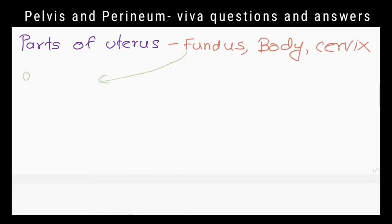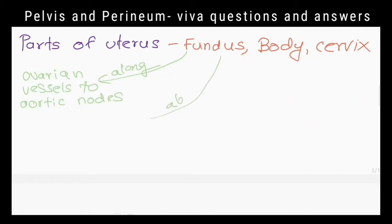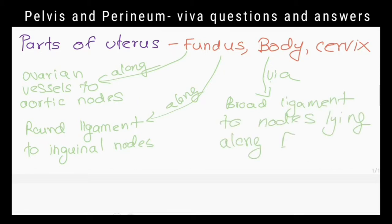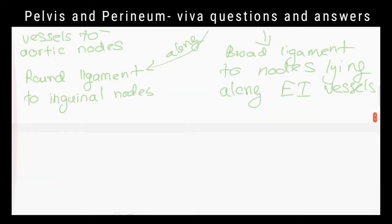Tell me about the lymph drainage of the other parts of the uterus. The fundus of the uterus drains along ovarian vessels to aortic nodes, and some lymph vessels pass along the round ligament to inguinal nodes. The body of the uterus drains via the broad ligament to nodes lying alongside the external iliac vessels.